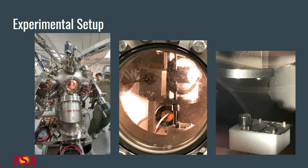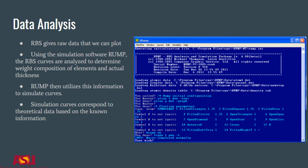RBS gives raw data that we can plot. Using the simulation software RUMP, the RBS curves are analyzed to determine weight composition of elements and actual thickness. What needs to be known beforehand are the number of layers in the sample, the elements present in each layer, and an approximate thickness for each of them. RUMP then utilizes this information to simulate curves. The user has to input and manipulate the data entered to match the curves as closely as possible.